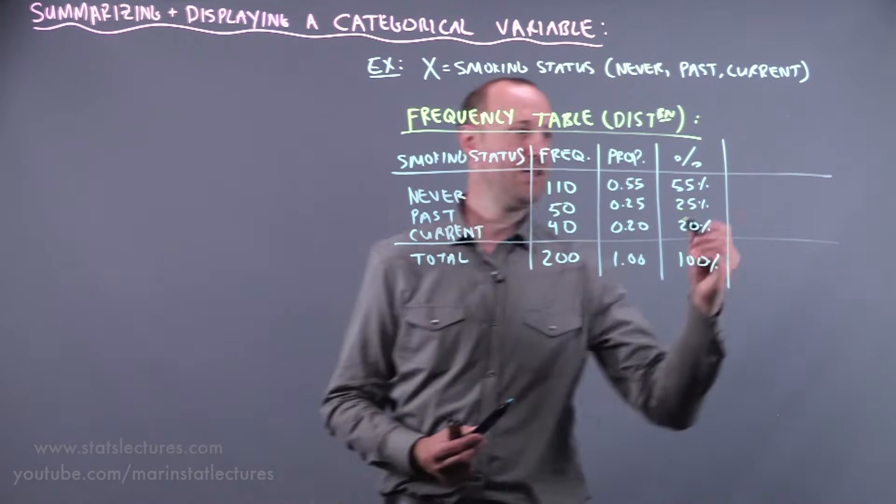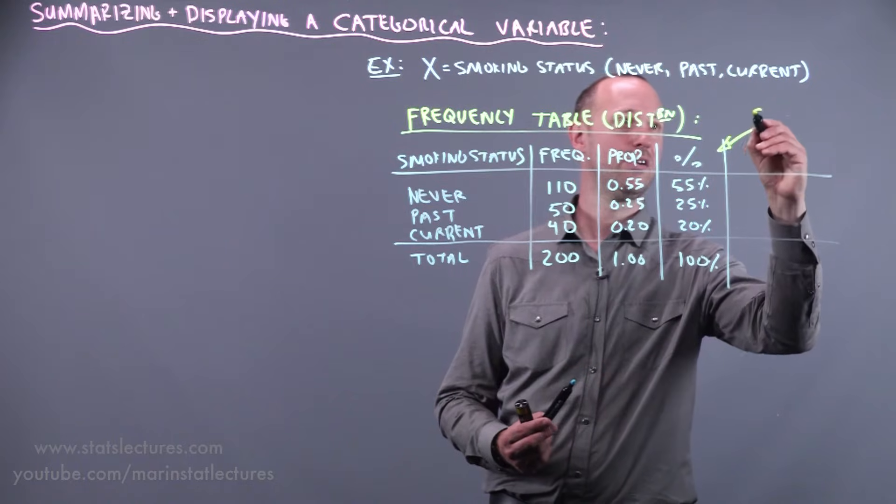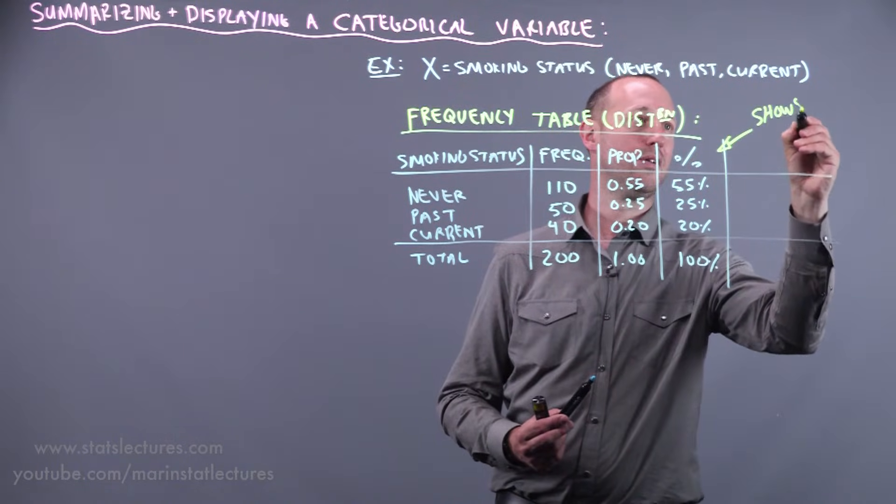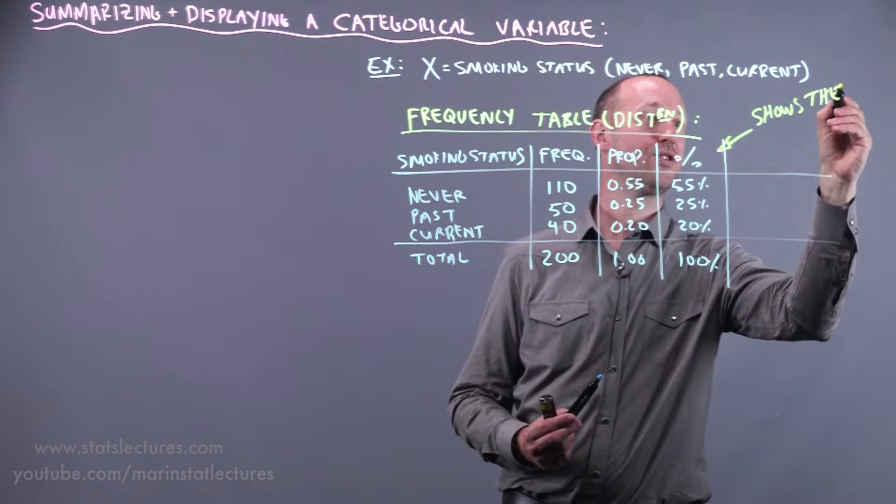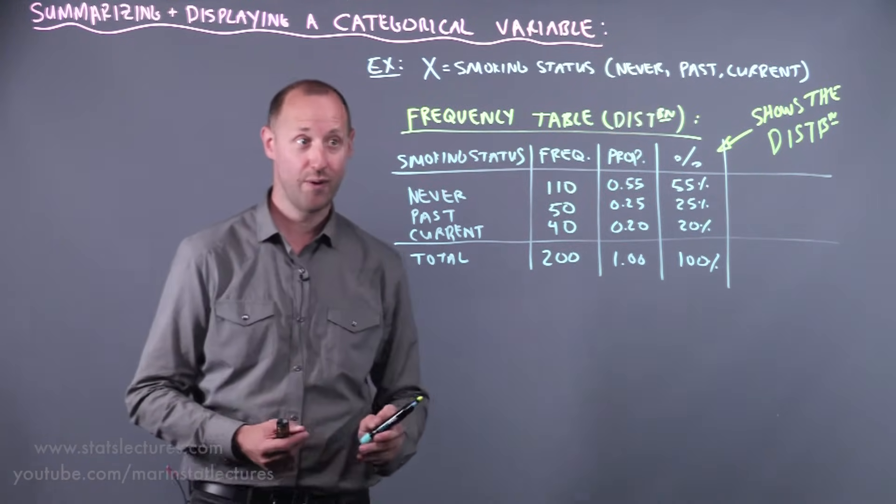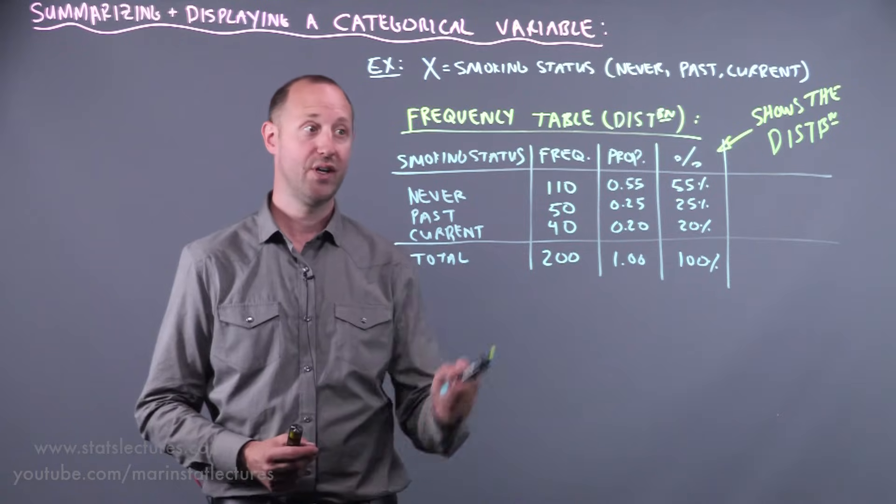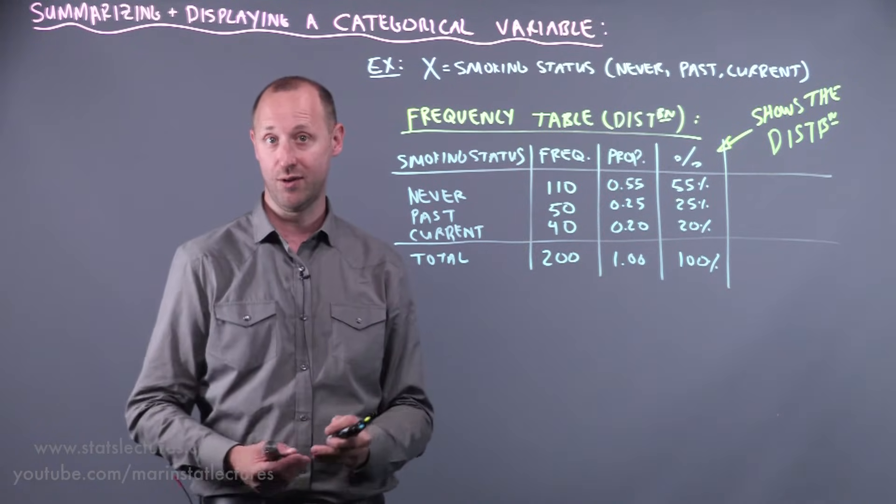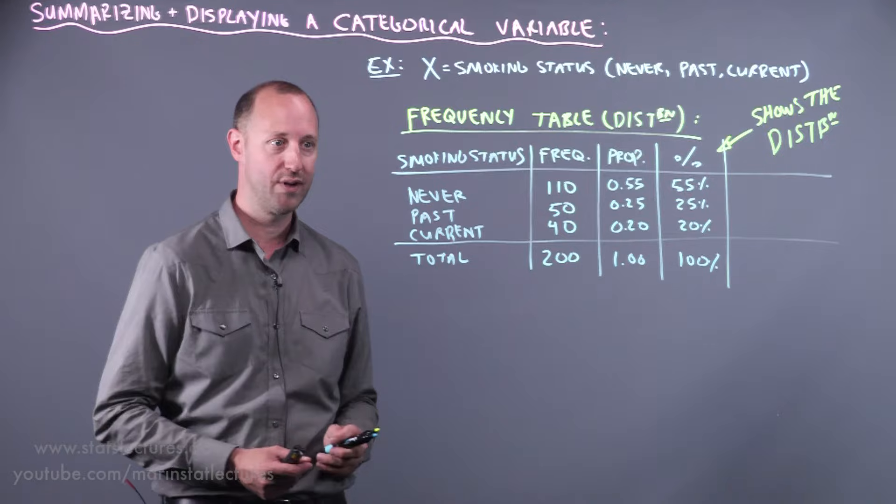Now an important note about this table: it shows the distribution—that's a keyword in statistics you're going to hear that word thrown around a lot. How are cases or individuals distributed amongst the different levels or categories of this categorical variable?